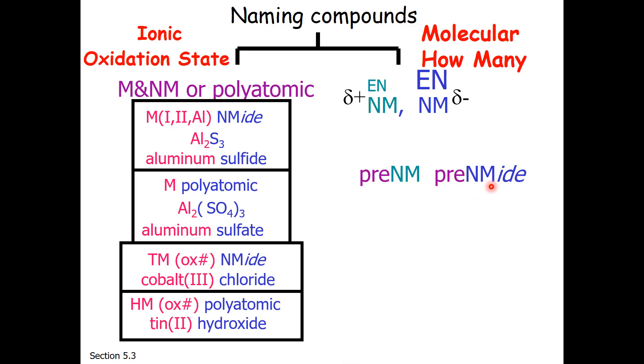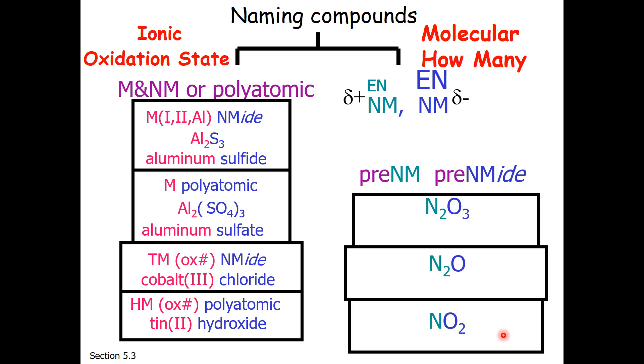For example, nitrogen and oxygen form several different compounds, depending on the stoichiometric ratio. So we're going to need prefixes to properly name the compound. The top one is dinitrogen trioxide. Notice how we go with the first atom's name, nitrogen, but the second one has an -ide ending. And di, of course, means two. Tri, of course, means three.